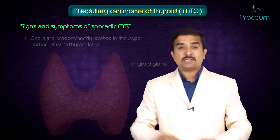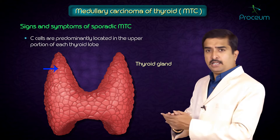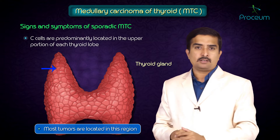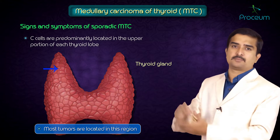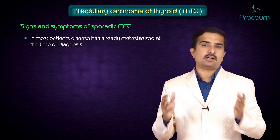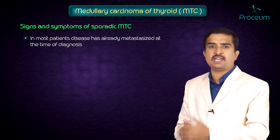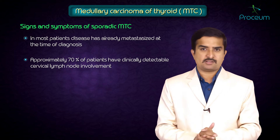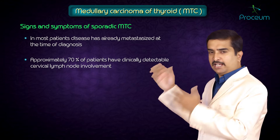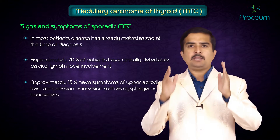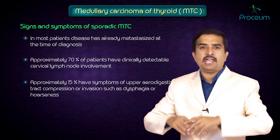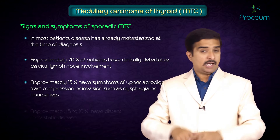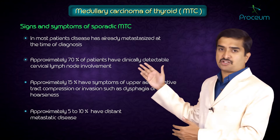The C cells are predominantly located in the upper portions of each thyroid lobe, so most tumors arise in this region. In most patients with MTC, the disease has already metastasized at the time of diagnosis. Approximately 70% of patients have clinically detectable cervical lymph node involvement, and approximately 15% have symptoms of upper digestive tract compression or invasion such as dysphagia or hoarseness of voice.